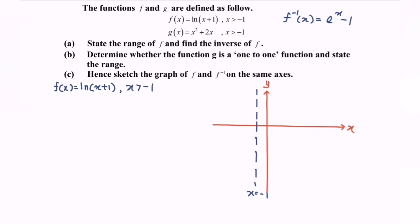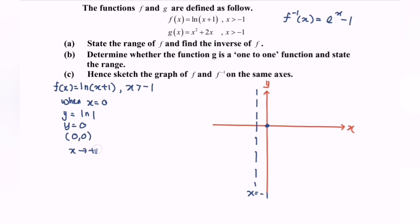Finding the intercept: when x equals 0, y equals ln(1) equals 0. So the graph cuts through the x-axis at the origin (0, 0). The coefficient of x inside the ln is positive, so the graph moves towards the right. This gives us the graph for y equals ln(x + 1).